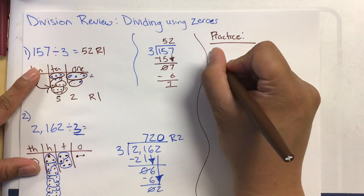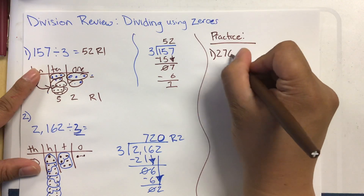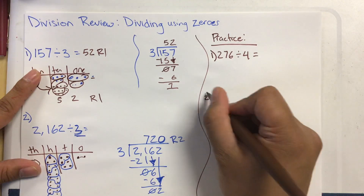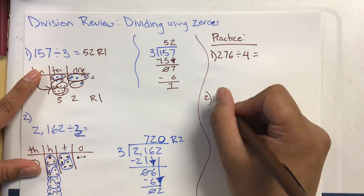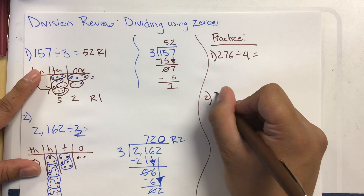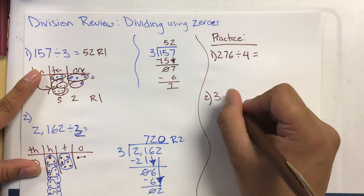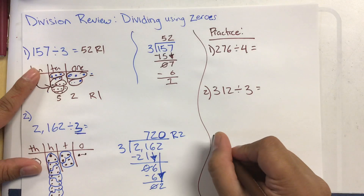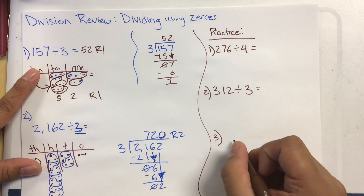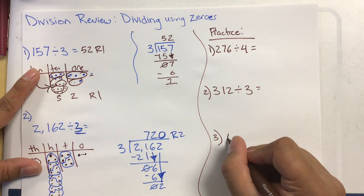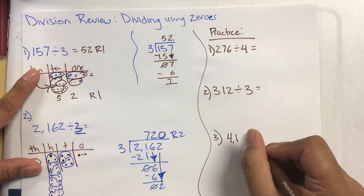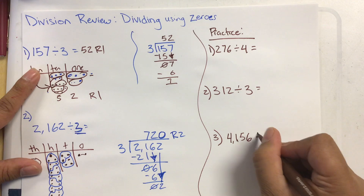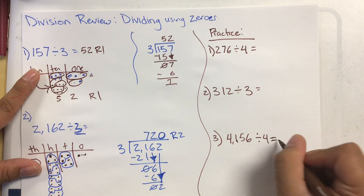Here are some practice problems for you to try. Practice number one: 276 divided by four. Number two: 3,312 divided by three. And your third problem: 4,156 divided by four. Let's see how these problems treat you!